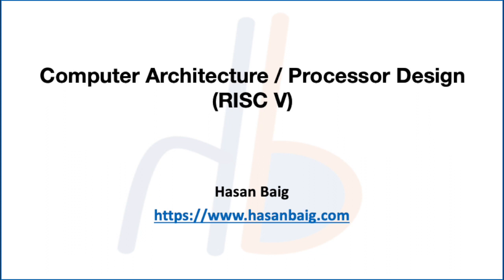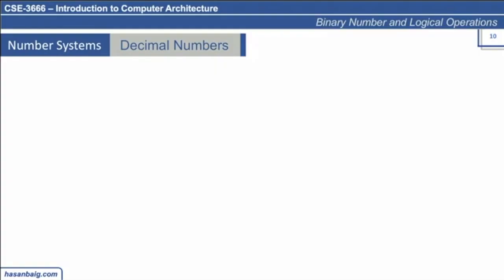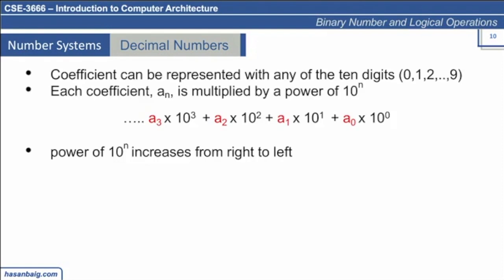The first is the very simple one which we are already familiar with and which we use in our daily life, called the decimal number system. In the decimal number system, the coefficient of a digit can be represented with 10 possible values from 0 to 9. Every digit in a number can be either 0, 1, 2, or up to 9.